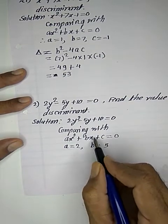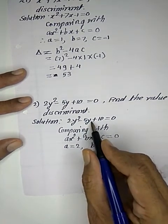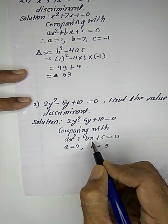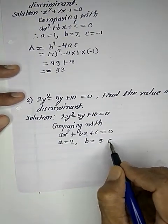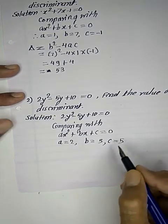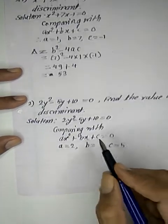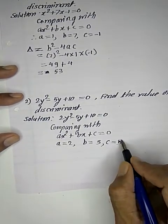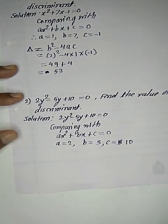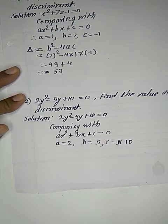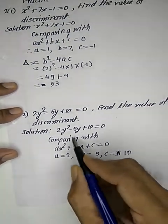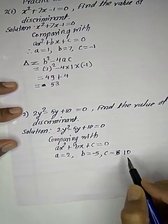The value of b is -5. Whether it's x or y, we can write it as ay² + by + c, where c is the constant term. So c is equal to 10.